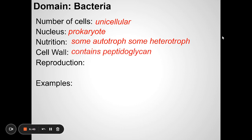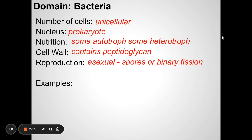Bacteria do have a cell wall, made of a special material. Regarding reproduction: some simple and more complex organisms can reproduce asexually or sexually. Asexual reproduction is when the organism makes a genetic copy of itself — a bacterium can just divide in two, producing two genetically identical bacteria. But some bacteria can also reproduce sexually by combining genetic material between two different individuals; in bacteria we call this conjugation.